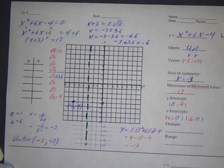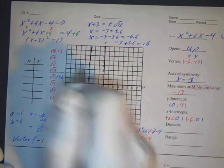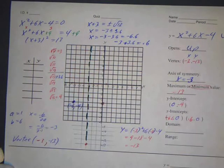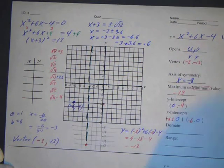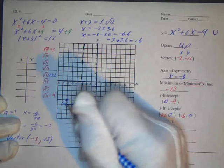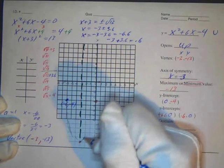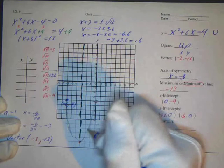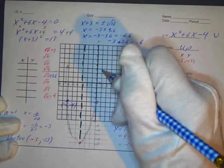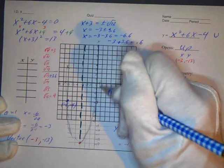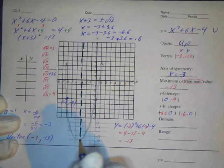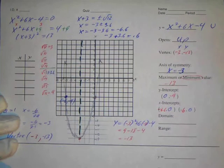Now we plot the x-intercepts: negative 6.6 is a little past the halfway mark on the left, and 0.6 is a little past the halfway mark on the right. With all five points placed, we draw a nice smooth curve through them to form the parabola, making sure the curve passes through both intercepts and the vertex.